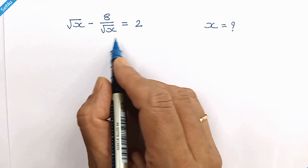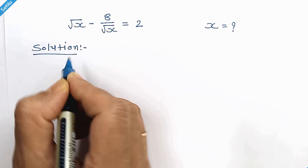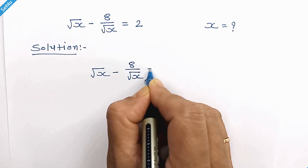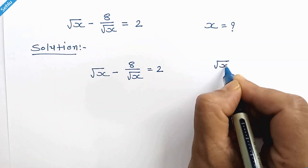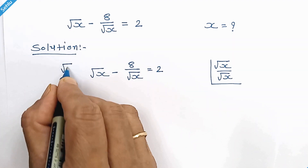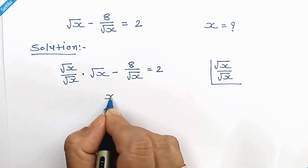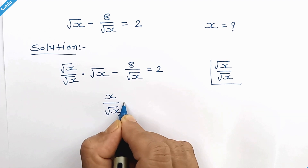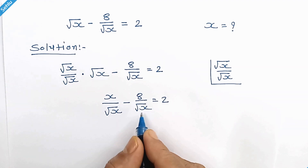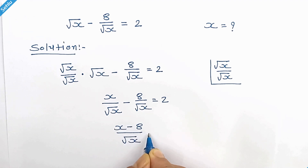Hello friends, beautiful math problem — let's solve for x. The question is: square root of x minus 8 over square root of x is equal to 2. Let's multiply by square root x over square root x, so square root x times square root x will be x. Now we have the same denominator, so we can write: x minus 8 over square root x is equal to 2.